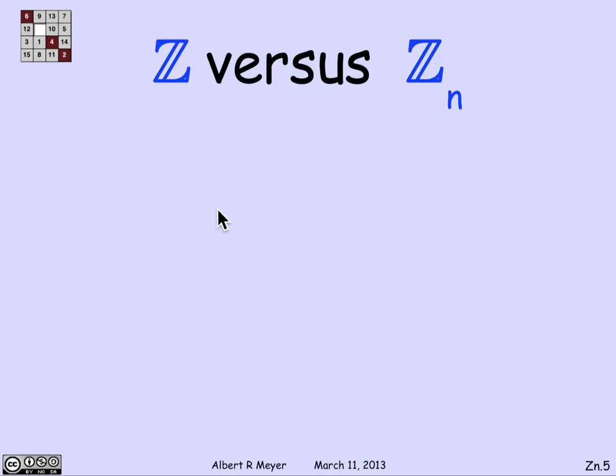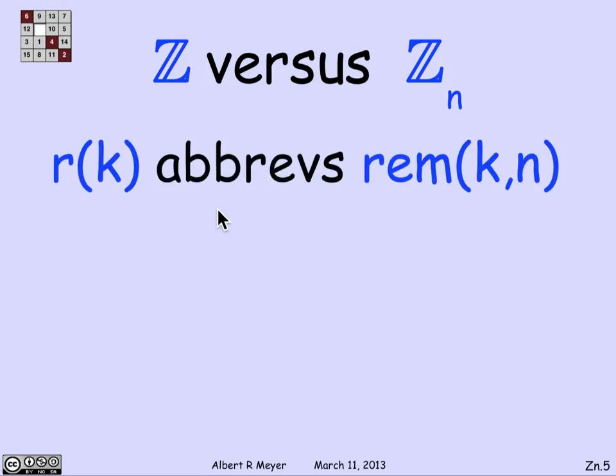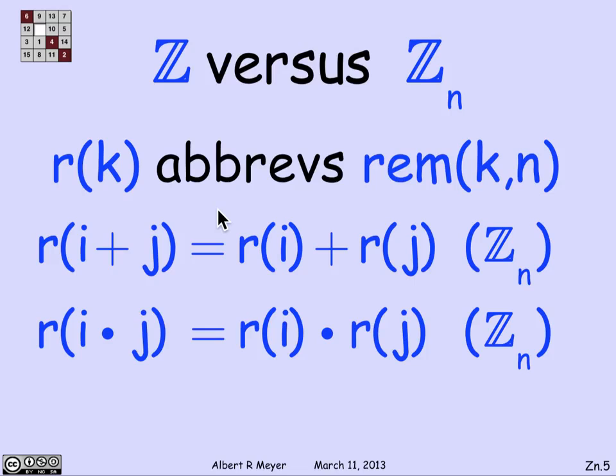So what's the connection between the set of all the integers and the integers mod n? And we can state this abstractly in the following way. Let's just, for convenience, abbreviate the remainder of k on division by n as r of k. So n is fixed. And what's the connection between Z and Z_n?